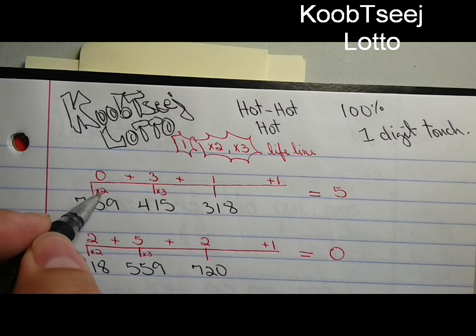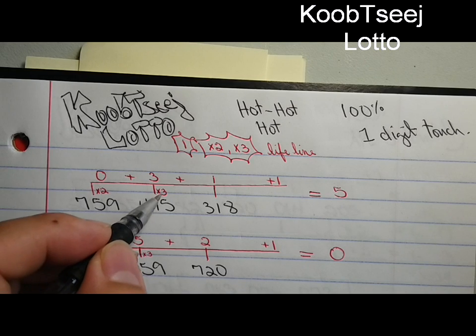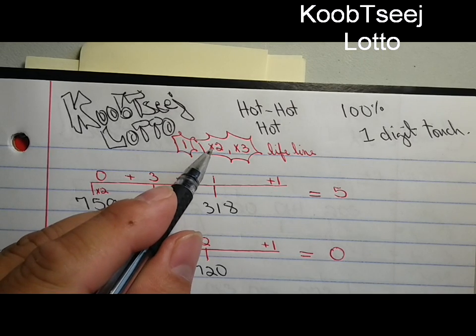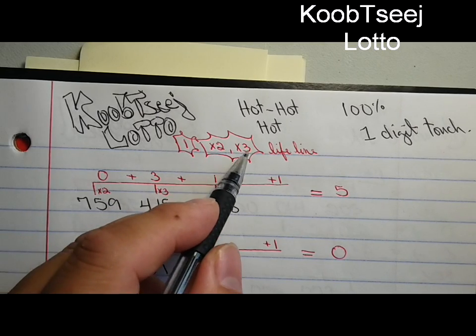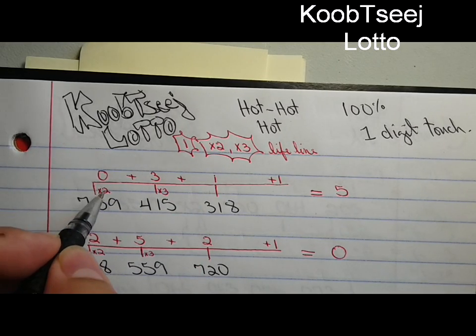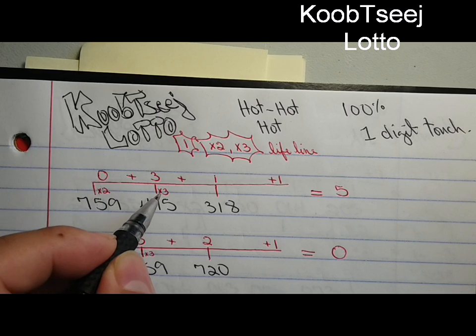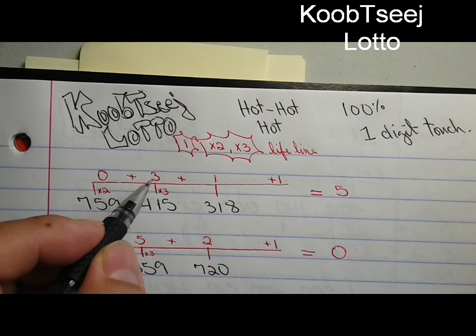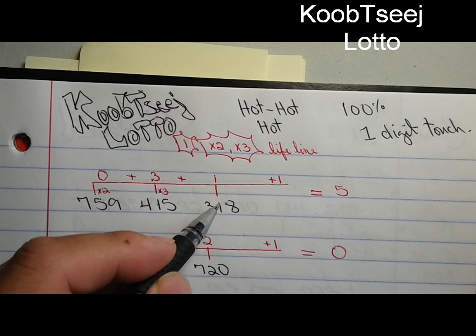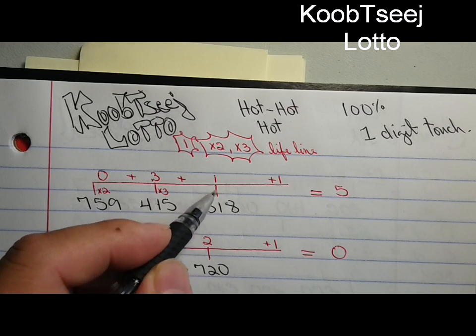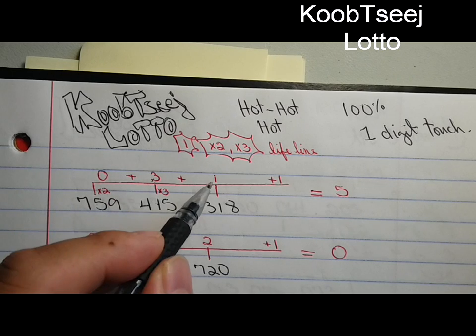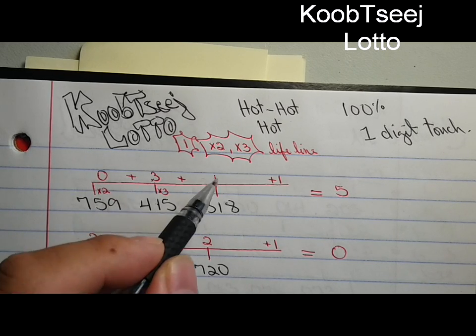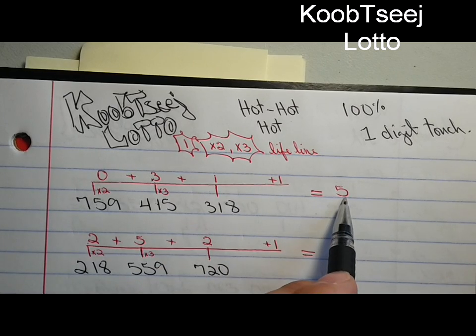You put two here, three times - that's why I put X here. Two times five is ten, three times one is three. We bring up the one. Zero plus three plus one plus one equals five.